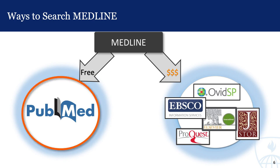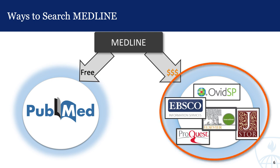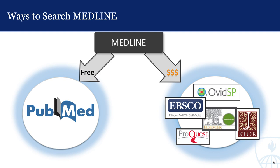The citations are also indexed using information such as publication types and substance names. PubMed is a tool that allows the Medline database to be searchable. Medline is also available through numerous other search services that license the data, such as Ovid, EBSCO, and Elsevier. The main difference is that PubMed is free to use, whereas there is a fee associated with using the others. If you're part of a university, this fee is usually paid for by the university's library, and the services are made available to you through the library's website.